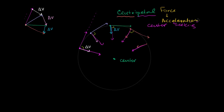Centripetal acceleration causes the object to go towards the center. The whole point of this exercise is that it wasn't intuitive to me that if you have an object going in a circle, the change in velocity — the acceleration, the force acting on the object — actually has to be directed towards the center. I drew these vectors and translated them here to show that the change in velocity is actually towards the center of this circle.